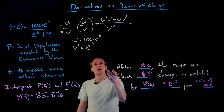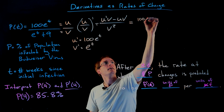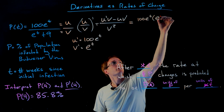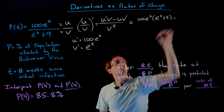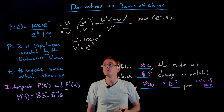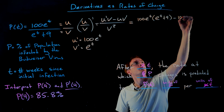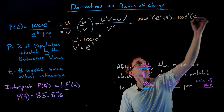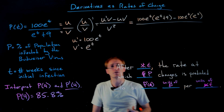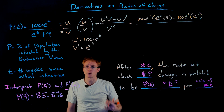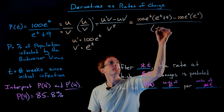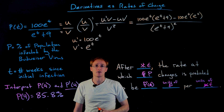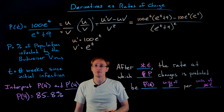Plugging into the quotient rule: u prime times v gives us 100e^t times (e^t + 9), minus u times v prime which is 100e^t times e^t, all divided by v squared — that is (e^t + 9) all squared. We don't expand the denominator, but we do simplify the numerator. We almost never expand the denominator in the quotient rule, but we want to simplify the numerator where possible.